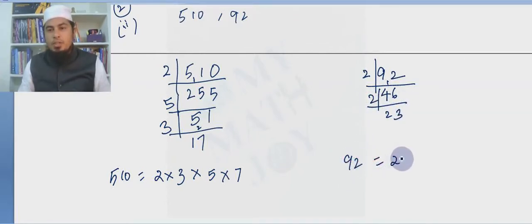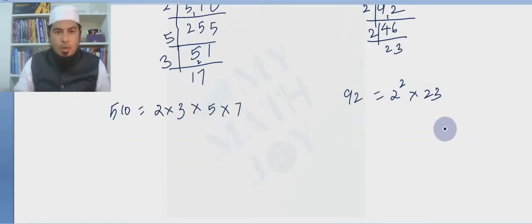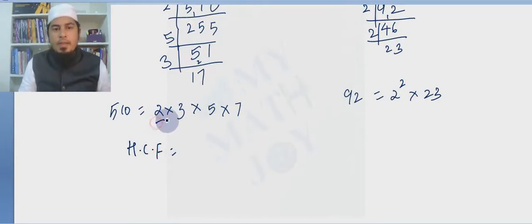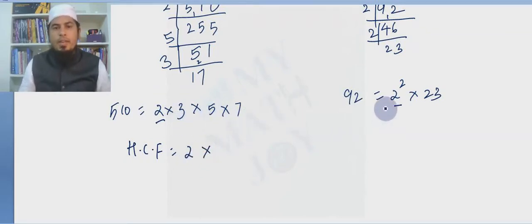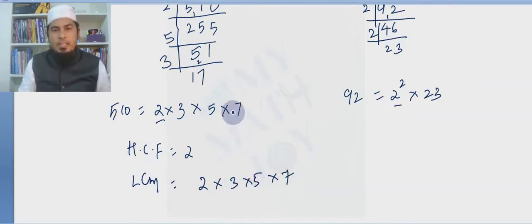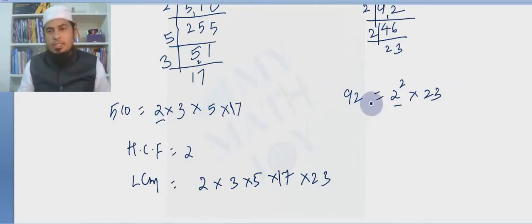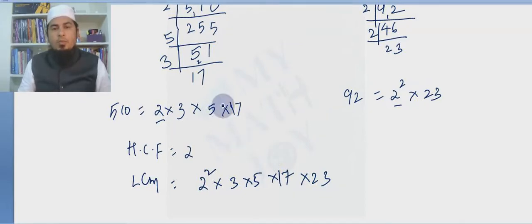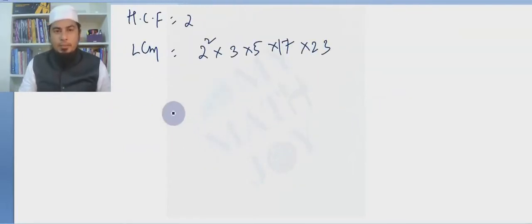Now what is HCF? HCF is the common factor with the least power. Looking at both factorizations, we find a common factor of 2 with least power. We don't have any more common factors, so HCF is only 2. For LCM, we write all the prime numbers with their highest powers: 2 squared, 3, 5, 17, and 23.